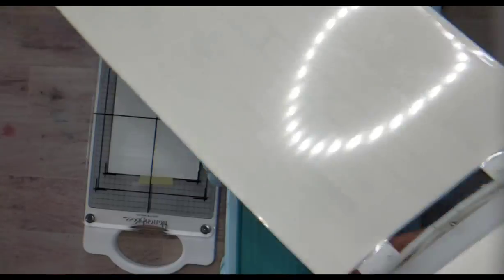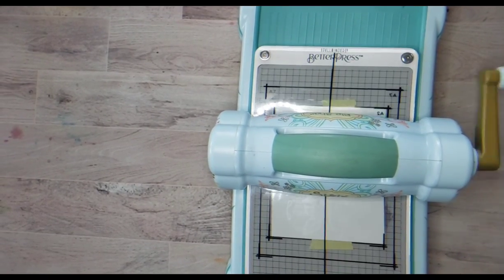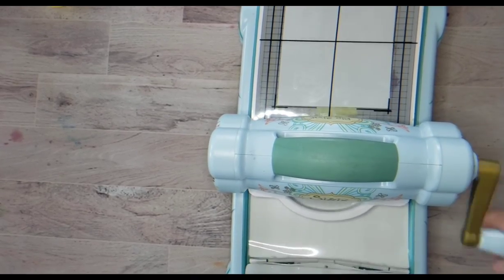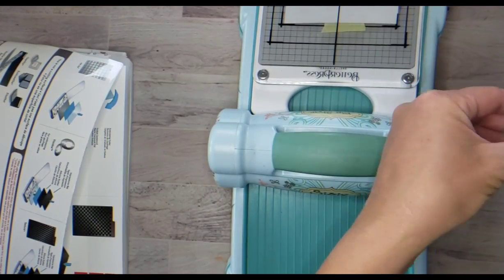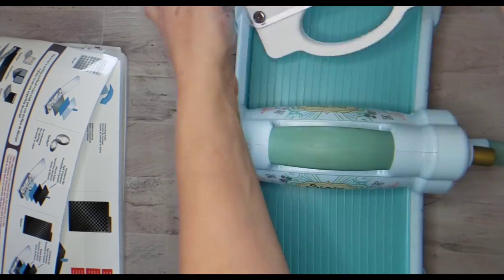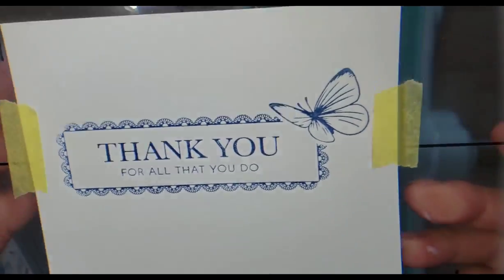And I'm also going to use another shim. So in my Sizzix Big Shot, the Sizzix platform has this skinny shim. And I'm using that as well as the shims that the Better Press came with. And now listen to this as I take this off and remove it. That is so good. That is so nice.